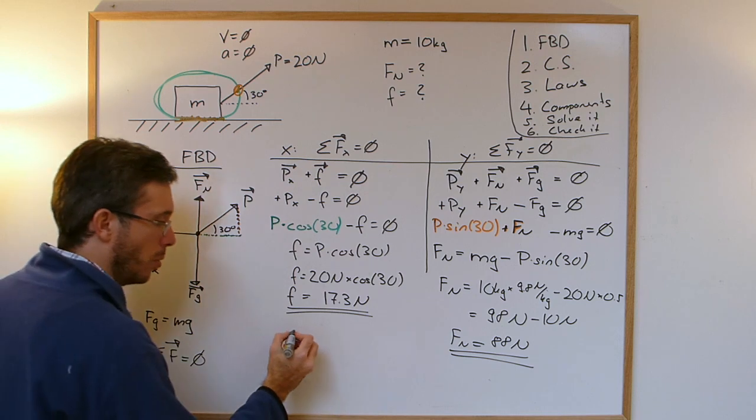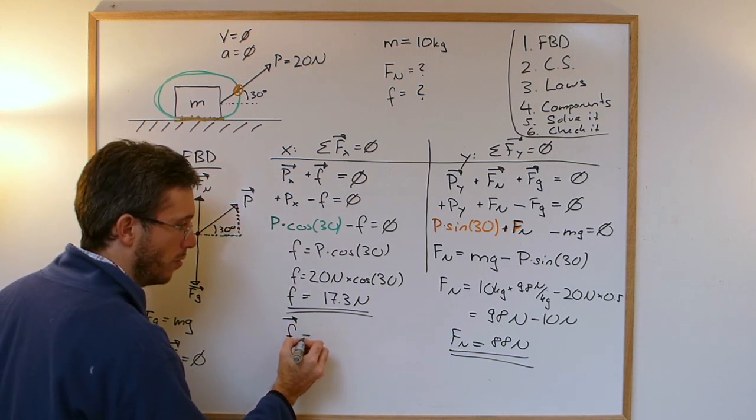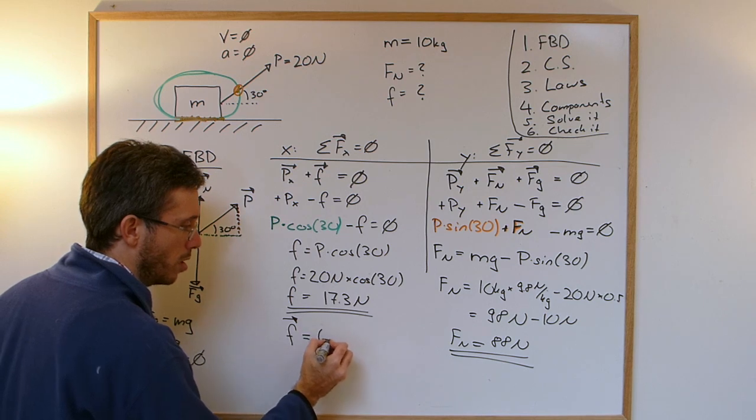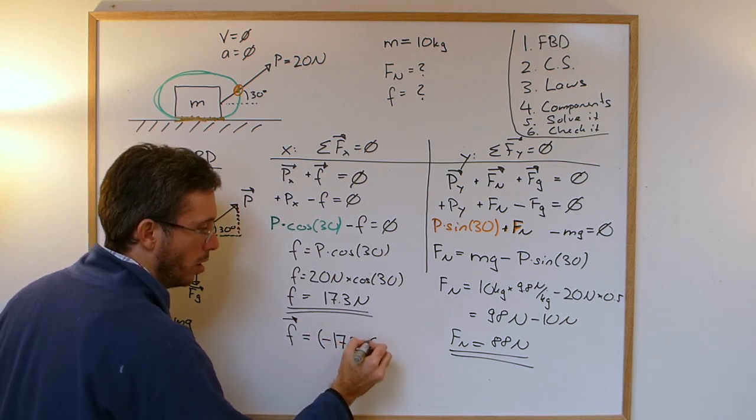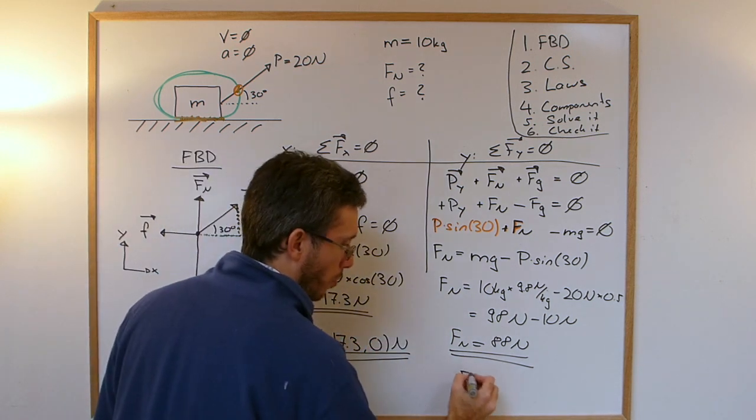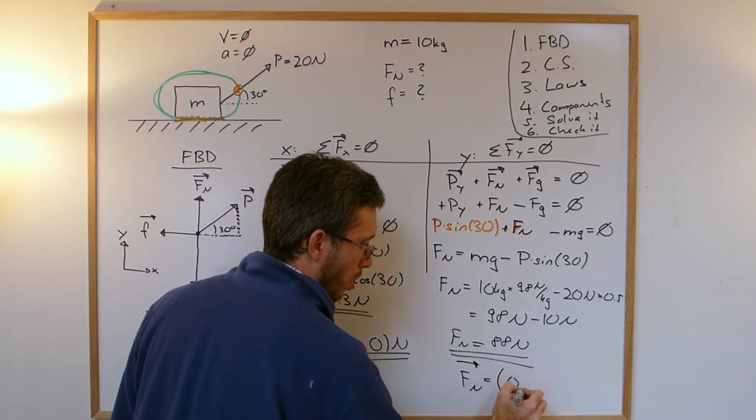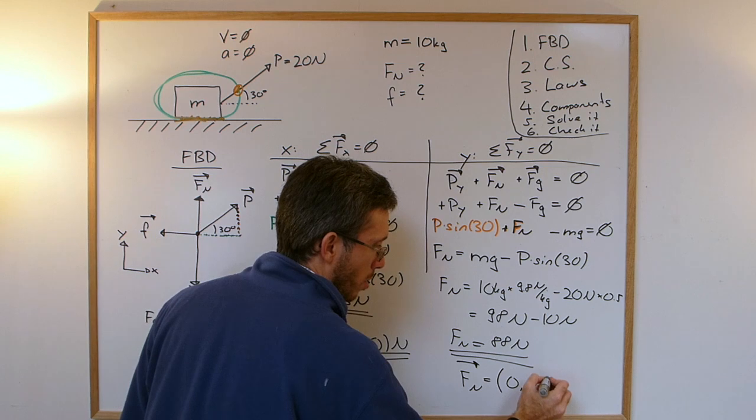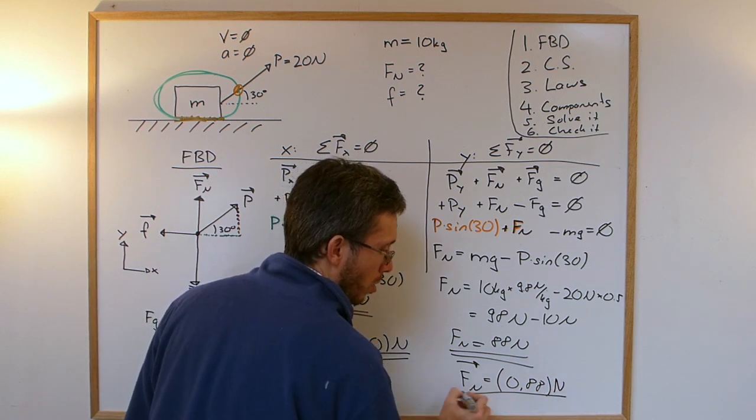Actually, if I want to rewrite, if somebody asked for the friction as a vector, the friction as a vector would, in this case, in my coordinate system be minus 17.3 in x and nothing in y, in Newton. While the normal force as a vector would have nothing in x and 88 in y in Newton.